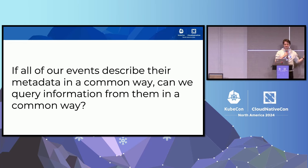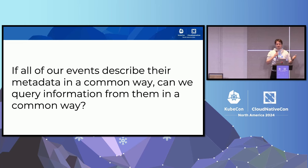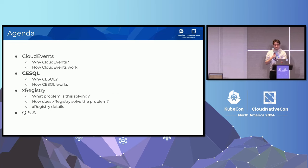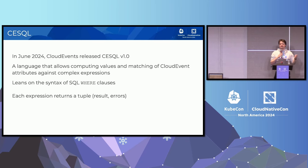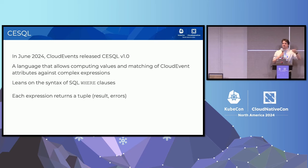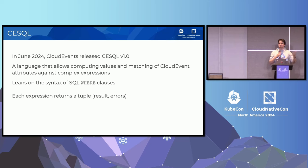One thing that comes out of having consistent metadata across all events is that we can now query information out of them. In the Cloud Events community, we wondered what's the best way to query information from events that all have this consistent metadata. What we came up with is Cloud Events SQL. In June 2024, Cloud Events released Cloud Events SQL version one — a simple, not even Turing-complete language that allows computing event values and matching attributes from Cloud Event context attributes, leaning on the syntax of SQL WHERE clauses.